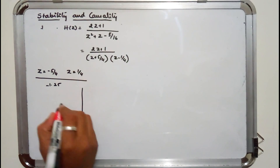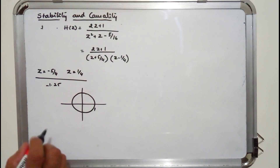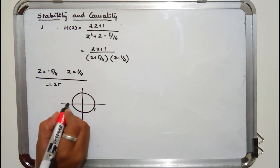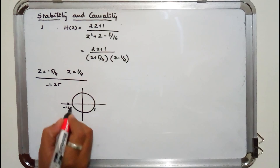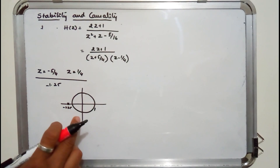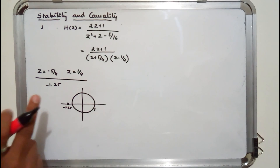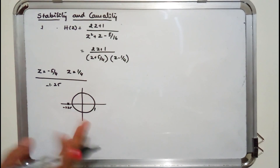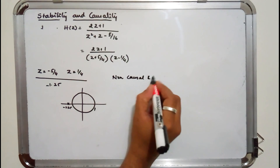The pole at z = −5/4 equals −1.25. If this is the unit circle with radius 1, this pole is present outside the unit circle. The condition that all poles must lie inside the unit circle is violated. Therefore, this system is non-causal and unstable.